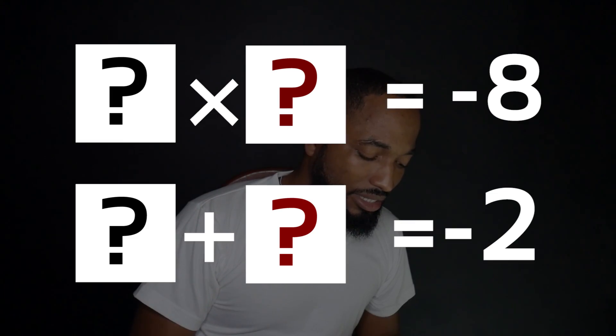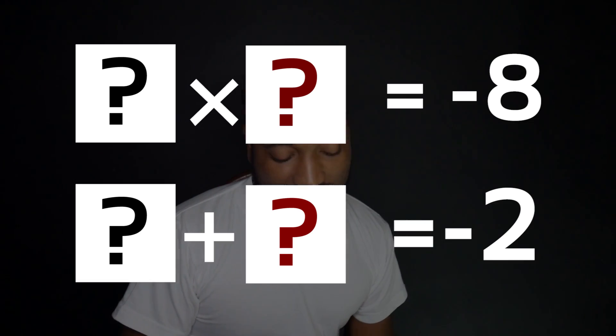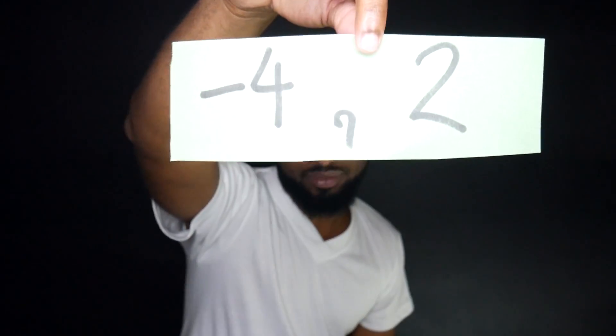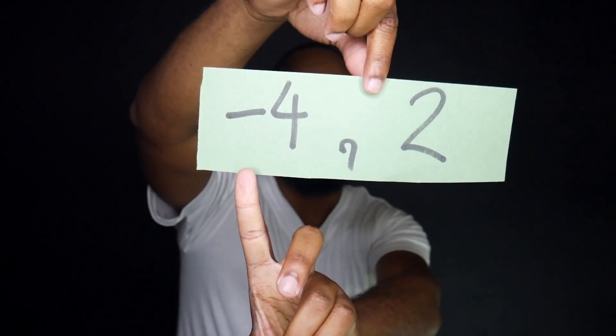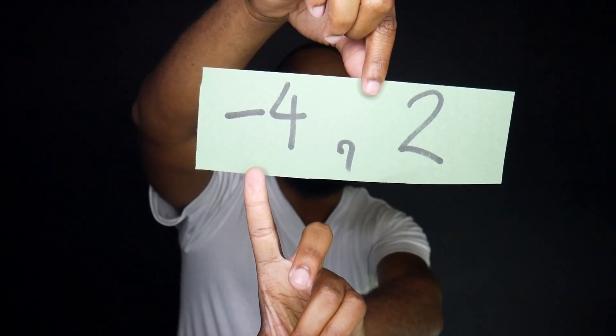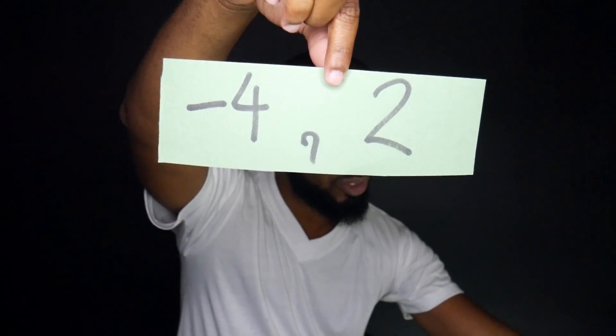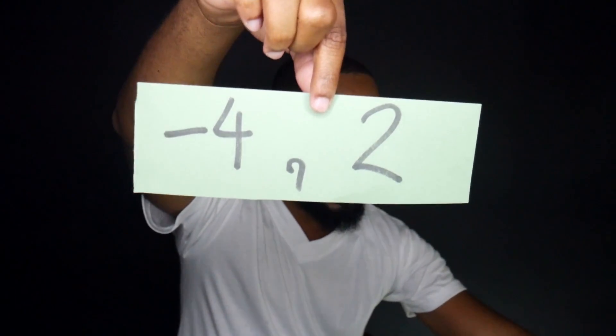These next two numbers add up to give me negative 2, but multiply to give me the same negative 8. This one is similar to the last one — you're multiplying to get negative 8, but when you add them together you get negative 2. Notice that the negative sign is only on the larger number this time, so that we get negative 2 when we add them together.